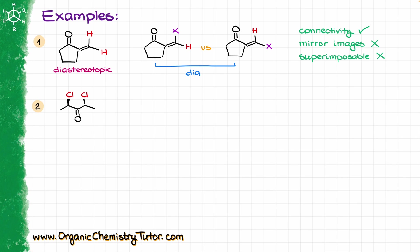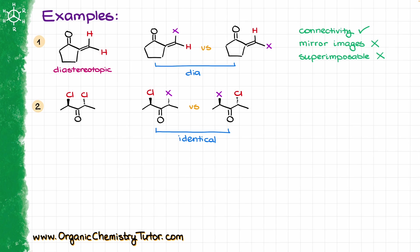For my next example, I'm going to check the topicity of the chlorine atoms. Like in the previous case, step one is to draw my molecule replacing one of the groups of interest with an X, giving me the following two molecules. If I analyze these molecules carefully, I will see that they are actually identical, because I can easily make one molecule into the other via a simple rotation around the vertical axis. Because the two molecules I ended up making after replacement with an X are identical, my chlorines in this molecule are homotopic.